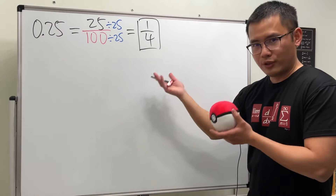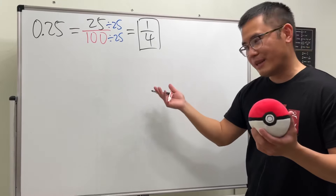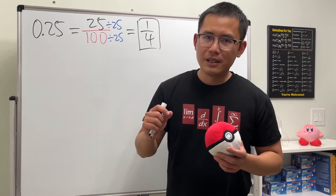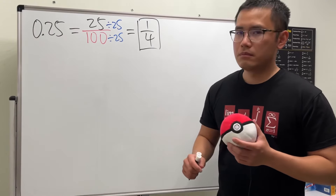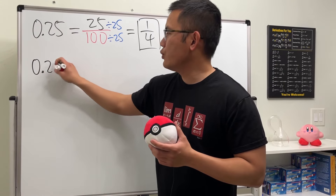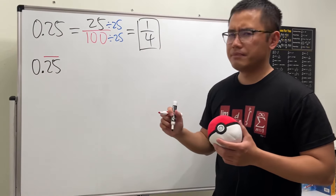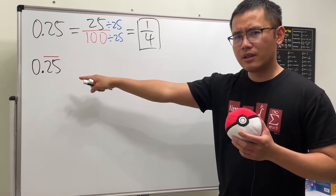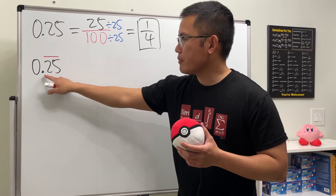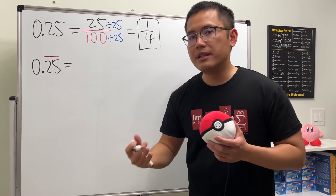This is a very well-known decimal and fraction — a quarter, just like 25 cents. Now let's do things a little differently. What if we have 0.25 but we have a bar on the top? When we have a bar on top of a decimal number, this means we have a repeating decimal.